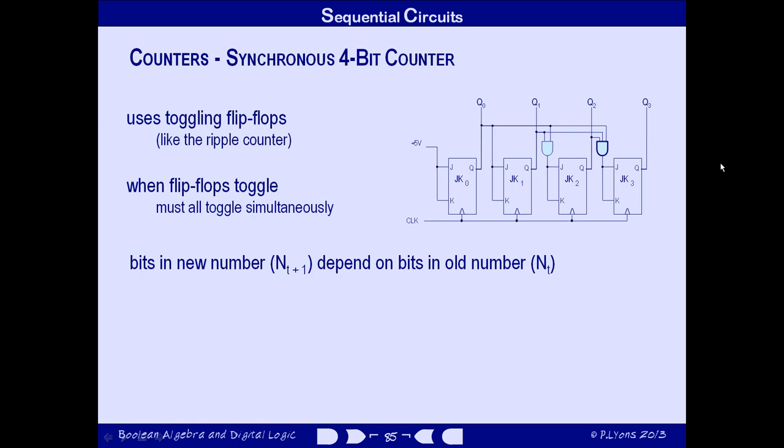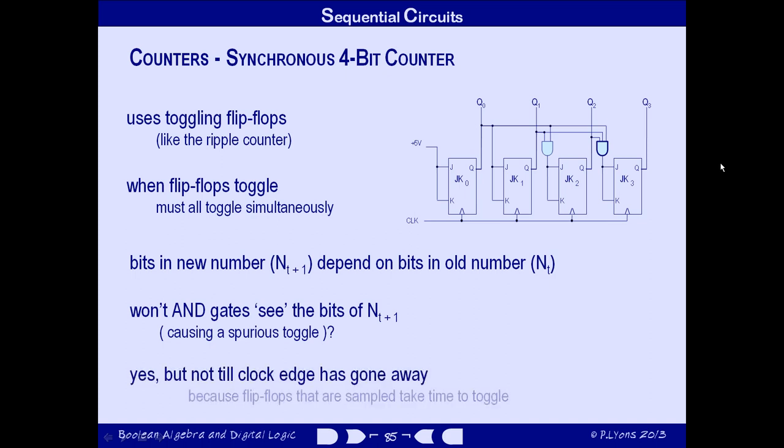Now, you might ask if the AND gates will input the bits of the new number and initiate a new toggle. Well, they'll certainly receive those bits, but because of the propagation delay inside the flip-flops, they won't receive them until after the clock edge has gone away. So they don't cause any extra toggles. That's a relief.